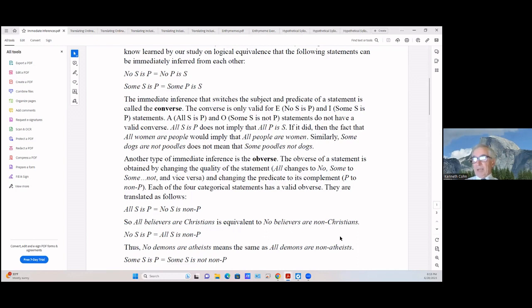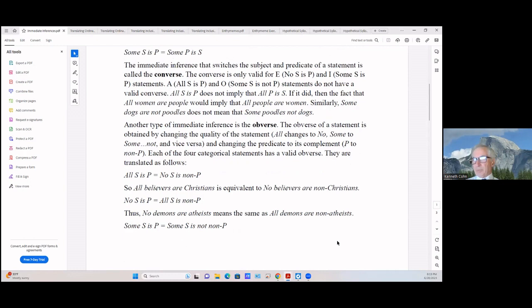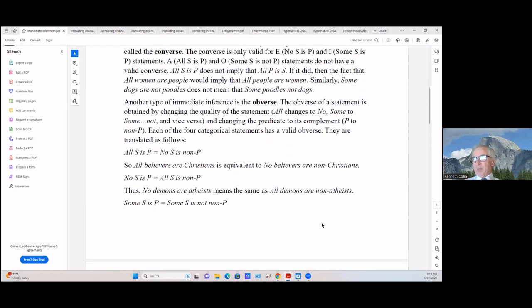All S is P equals no S is non-P. Well, if all S is P, every last single S is a P, then there's not an S that's not a P. But it doesn't mean that all P's are S's. So all believers are Christians is equivalent to no believers are non-Christians. That is, no S is P and all S is non-P. So that's the obverse, not the converse, the obverse.